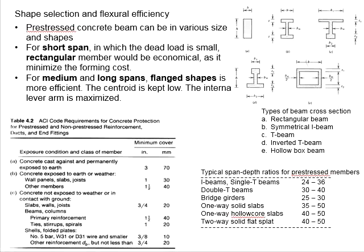However, for medium and long spans, the sections with flanges would be more efficient. This can adjust the centroid in order to maximize its lever arm for flexural resistance.